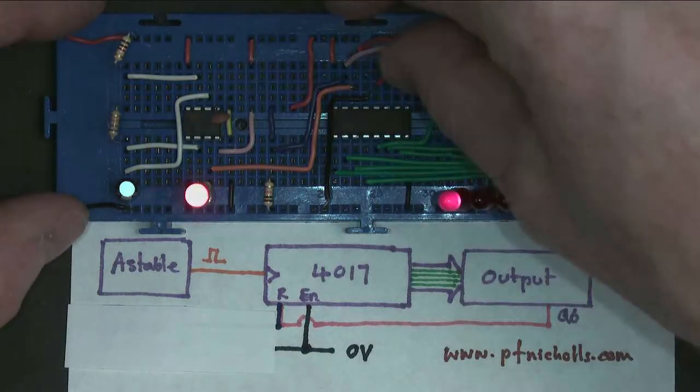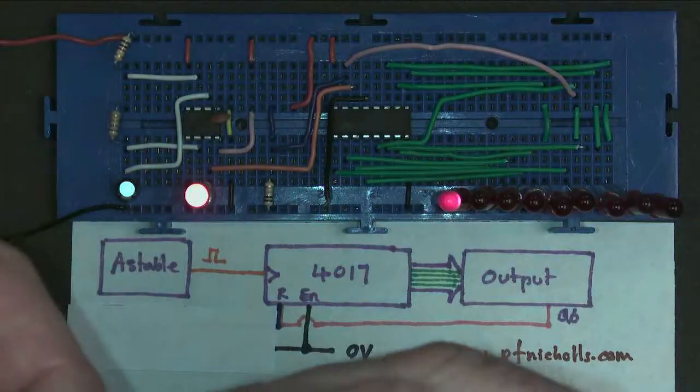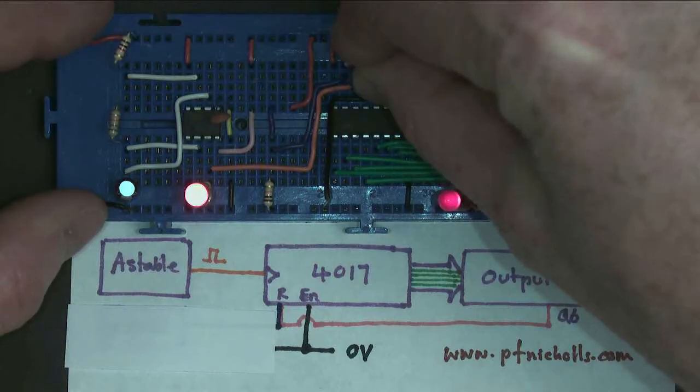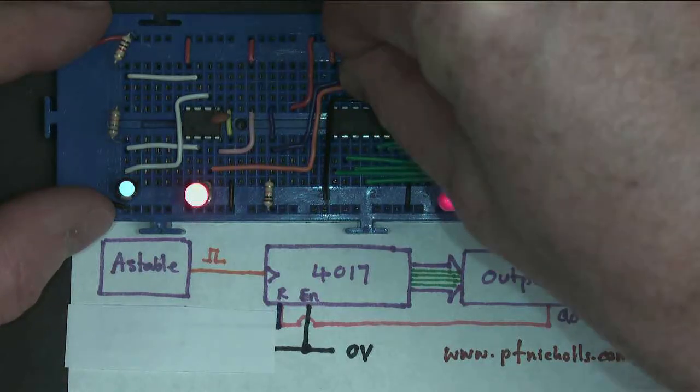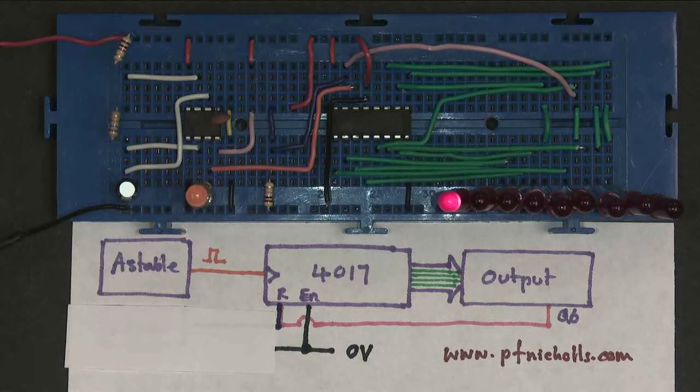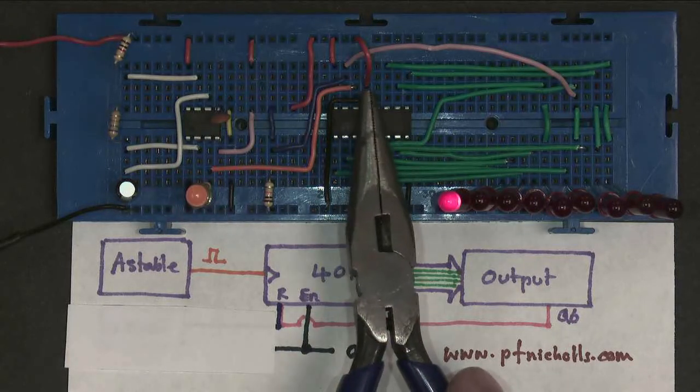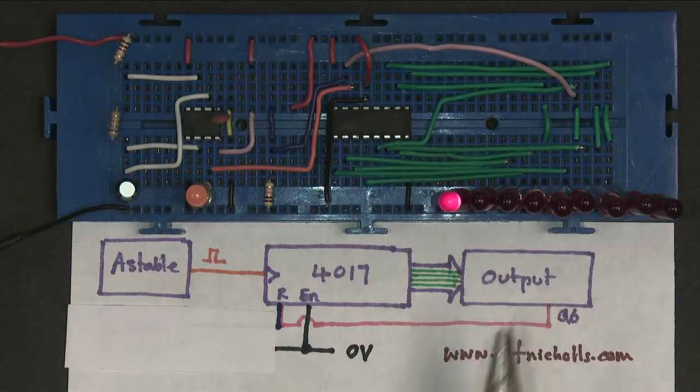If I connect the clock enable to positive, then what happens now is the counter stops counting completely. So when the chip enable is connected to positive, like it is now, the 4017 doesn't count.